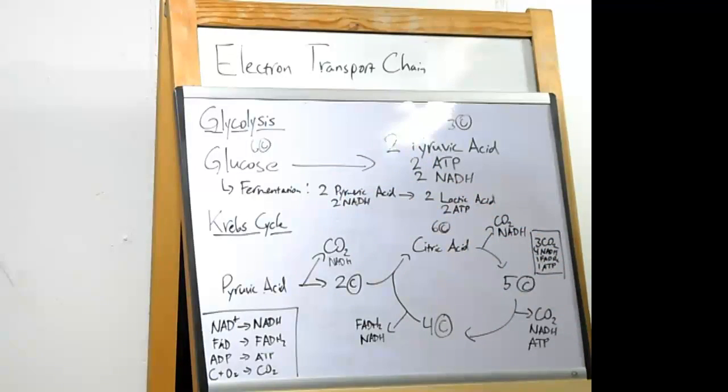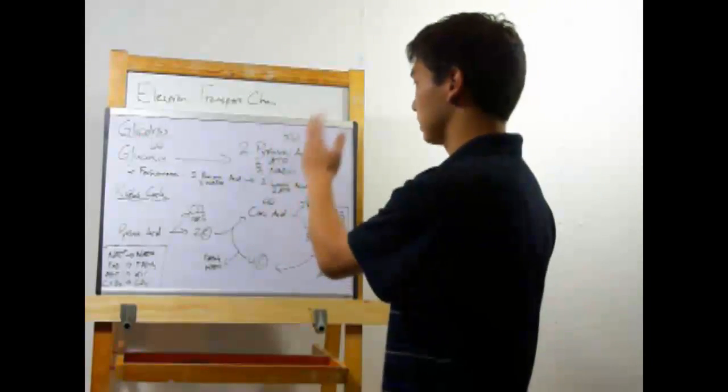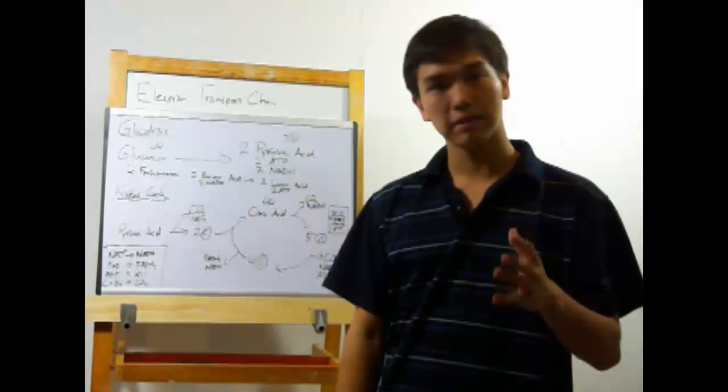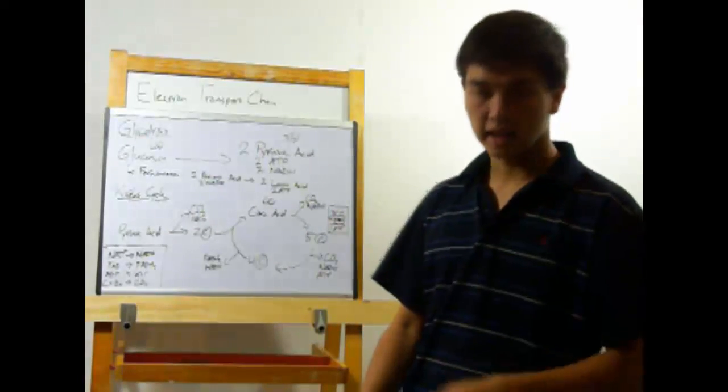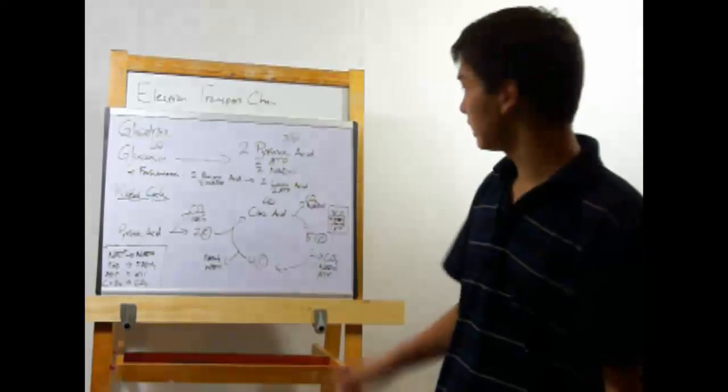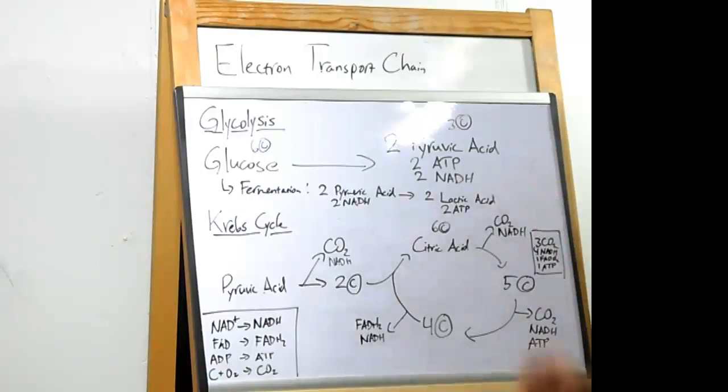In glycolysis, you start out with glucose, a six-carbon molecule, and you convert it into two pyruvic acids. Each pyruvic acid has three carbons in it. It's kind of like breaking glucose in half. Glycolysis also produces two ATP and two NADH.